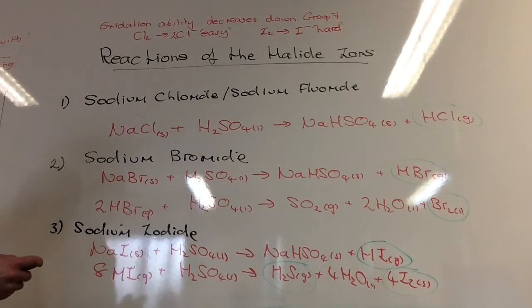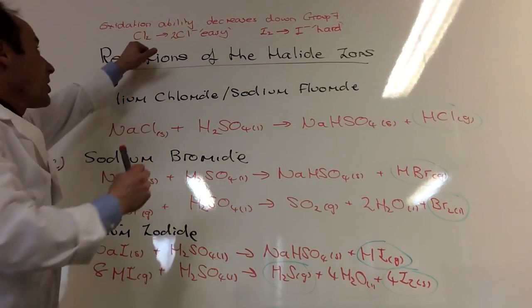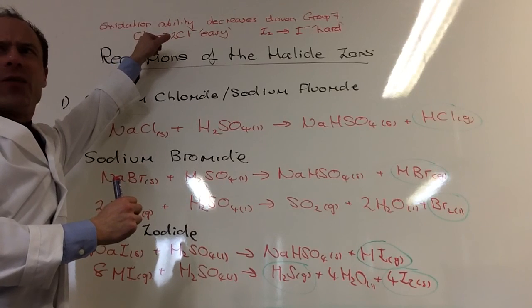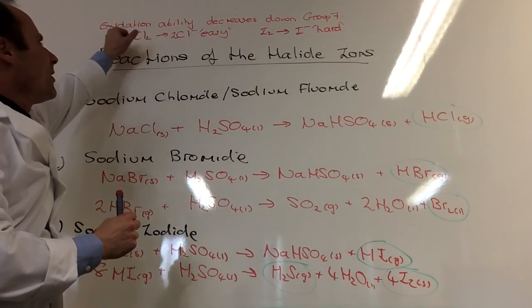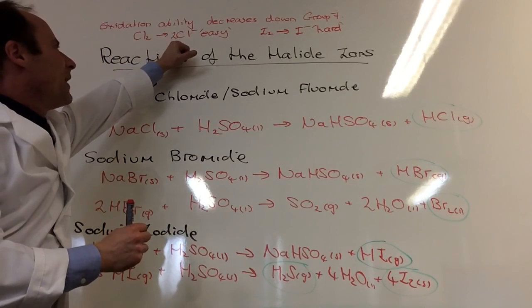What we're going to look at now, reactions of the halide ions, but last time we were starting, kind of looking at how good these were, going the other way. So these guys, chlorine becoming chloride.